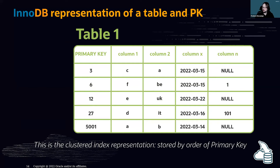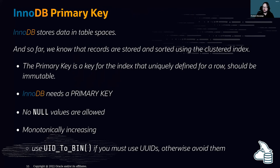InnoDB stores data in a tablespace, sorted using the clustered index. The primary key uniquely identifies a row and should be immutable. InnoDB requires a primary key — NULL values are not allowed. Importantly, it should be monotonically increasing. If you want to use UUIDs, use UUID_TO_BIN to keep them sequential; otherwise avoid UUIDs and I'll show you why.